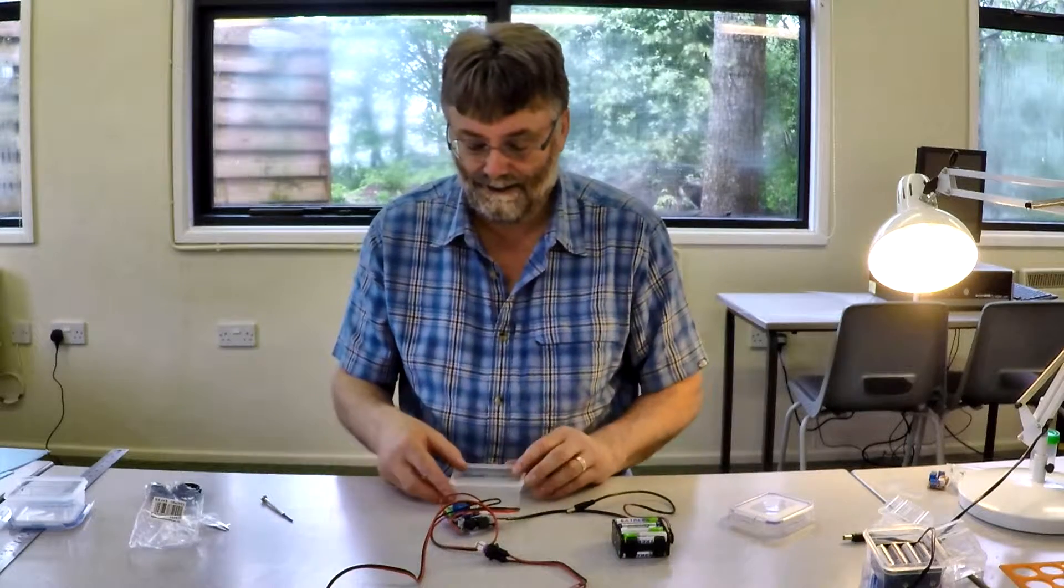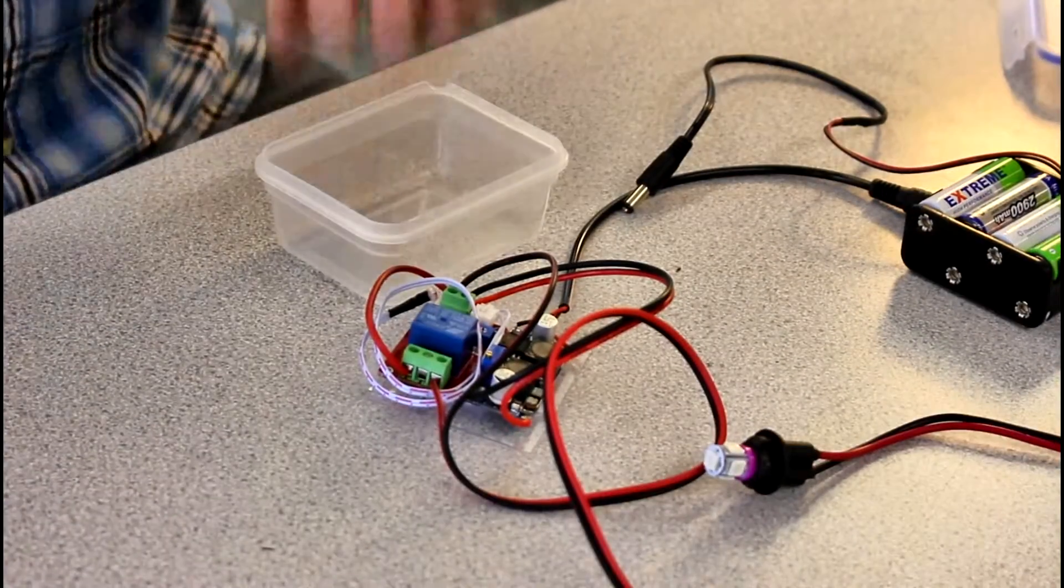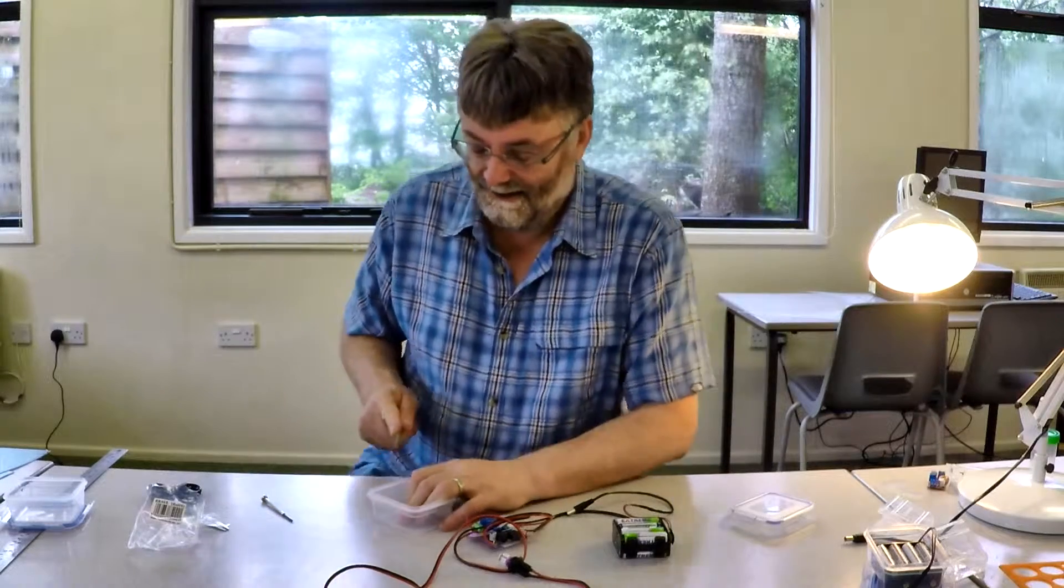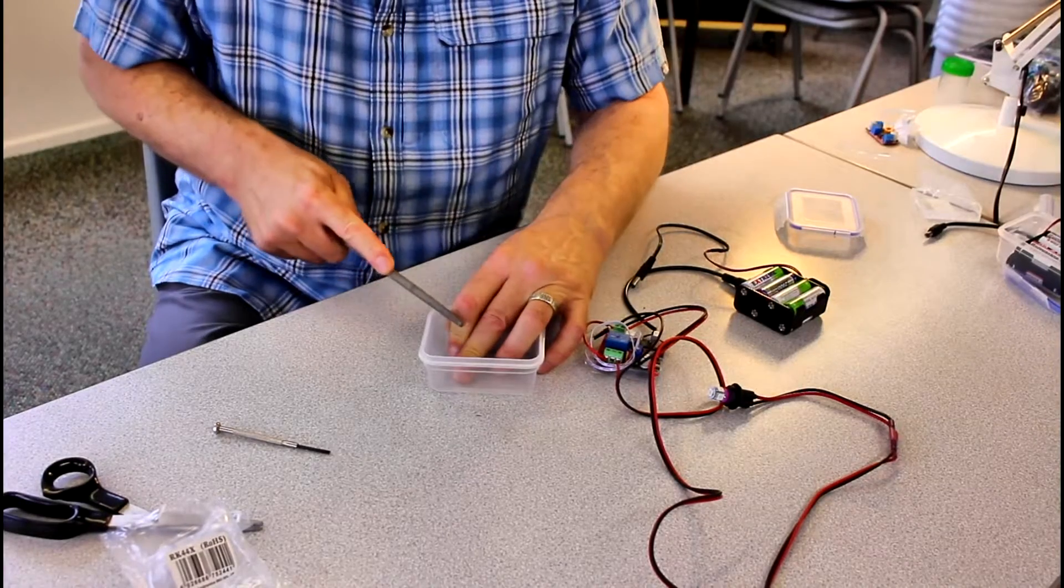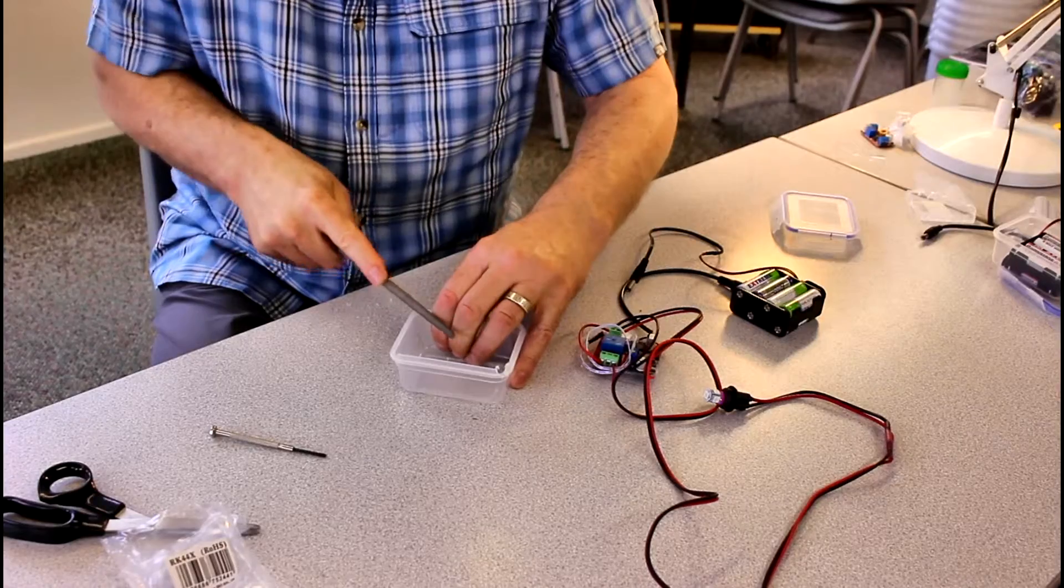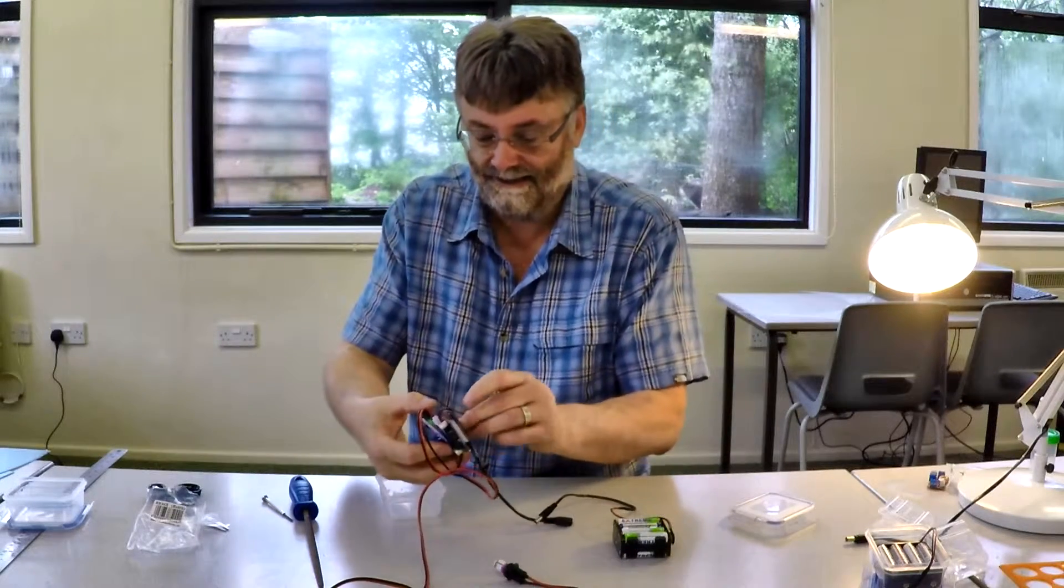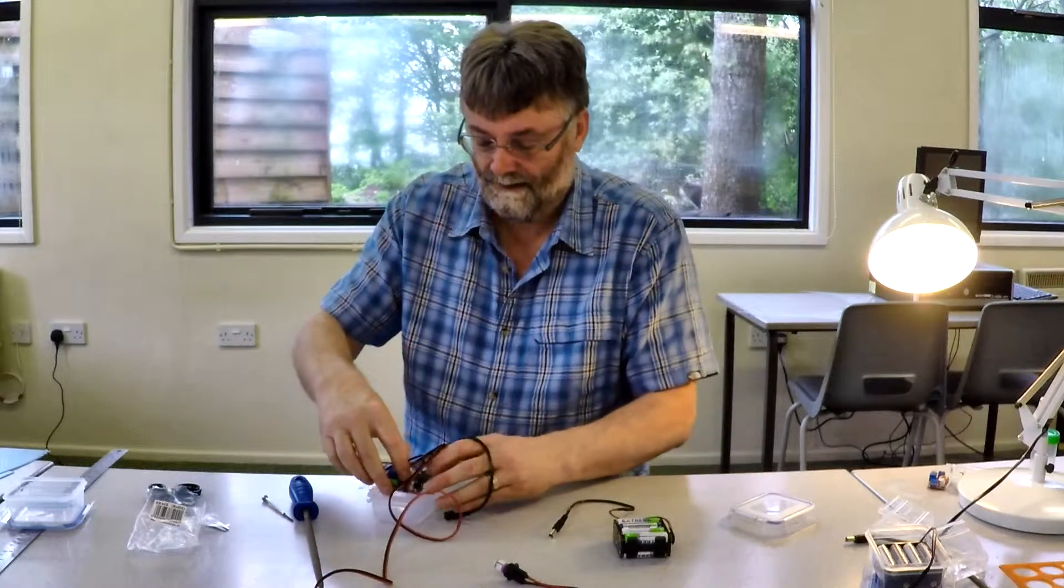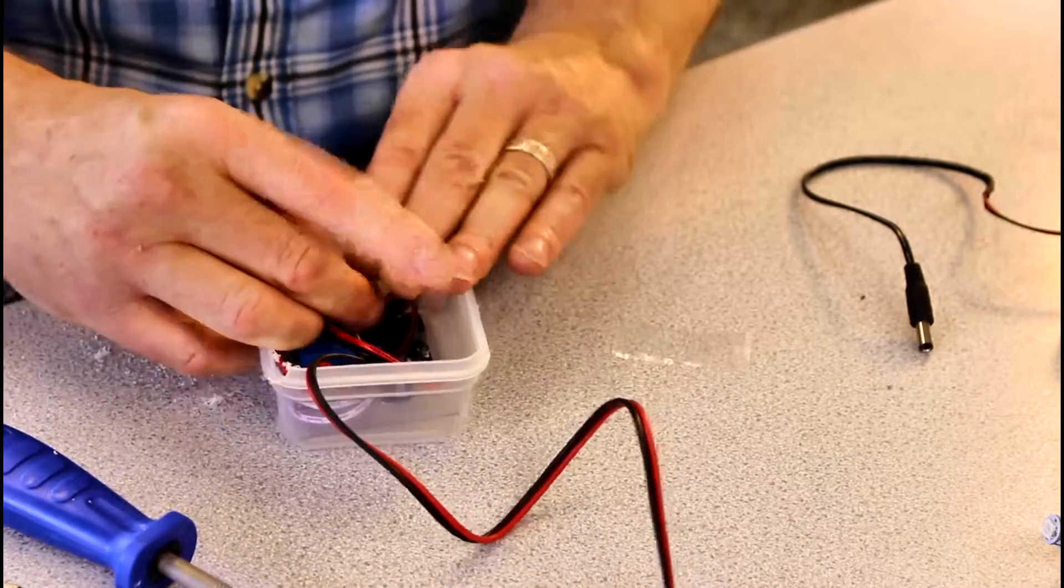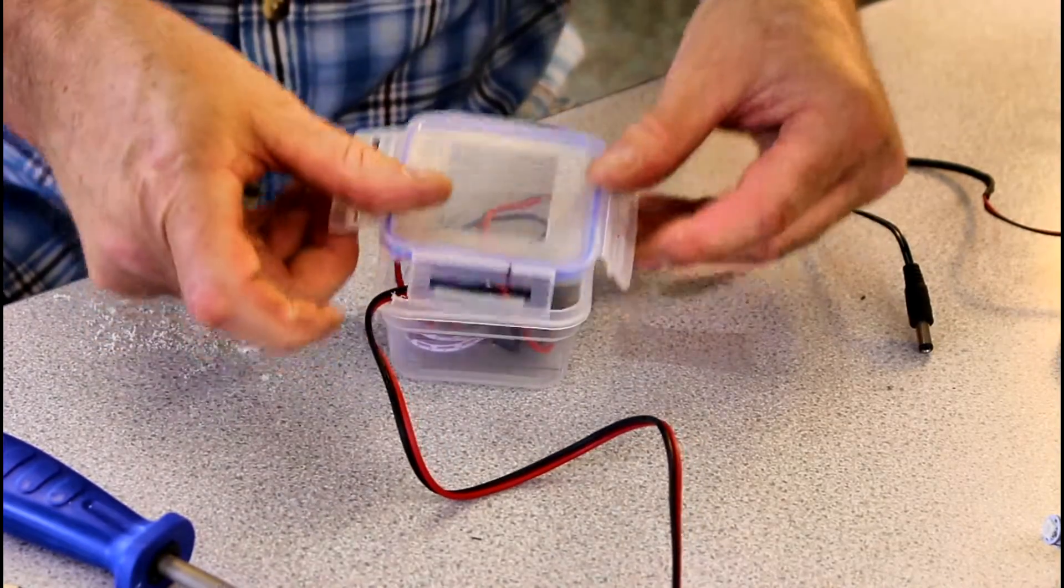And the very last thing that we need to do is I need to do some filing. And what we need to do is file two little grooves in the plastic box to let the wire out. So I always do it in the corner. One, two. Now we can stick this in here. And when we're using the moth trap, we can put the lid on and let the wires out like this.